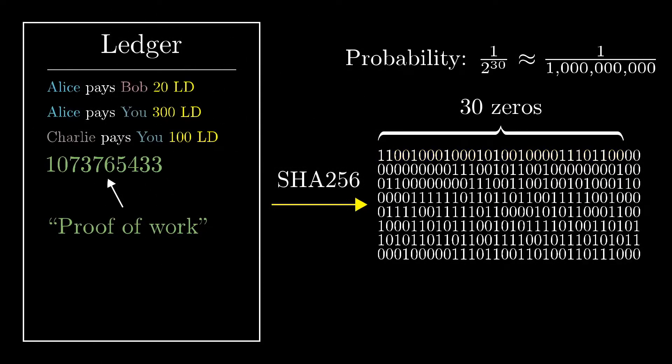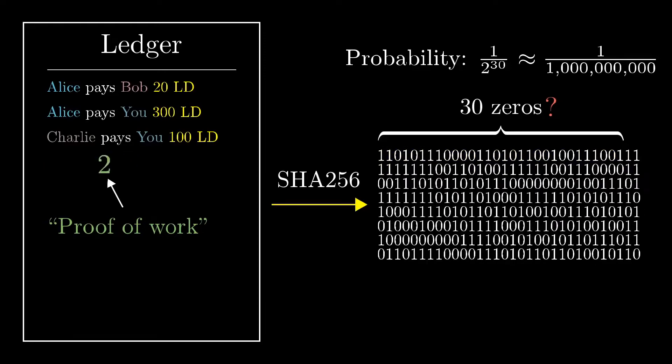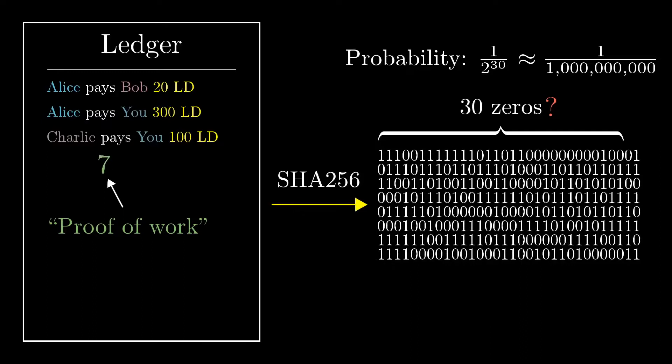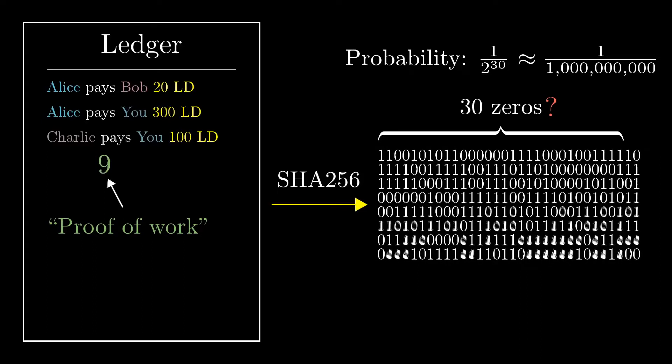So you'd have to go through another billion guesses to find a new proof of work—a new number that makes it so that the hash of the altered list, together with this new number, starts with 30 zeros.